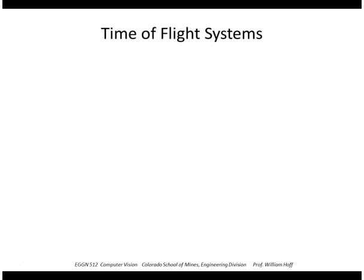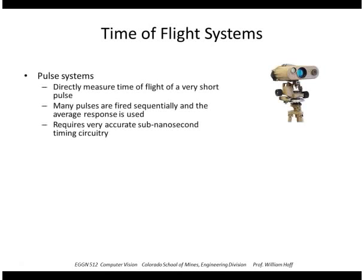The other type of range sensor is a time-of-flight system. One variant is a pulse system, which measures the time of flight of a short laser pulse — it fires the pulse at a target and measures the actual time it takes to return. This requires very accurate timing circuitry.